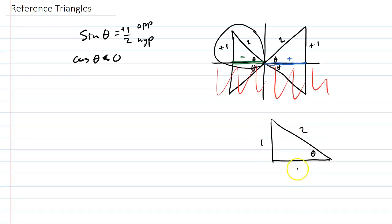So the reference triangle we're going to go with is theta 1, 2. And we still have to figure out this other side, but we also know it's going to be negative. So 1 squared plus x squared equals 2 squared. X squared, this is 4 and 1, so this is going to be 3. X is going to be root 3, and not only root 3, it's going to be negative root 3.